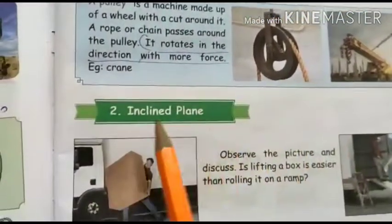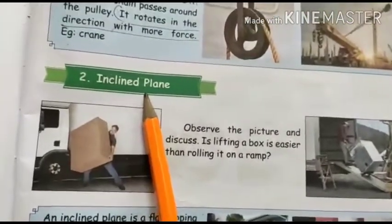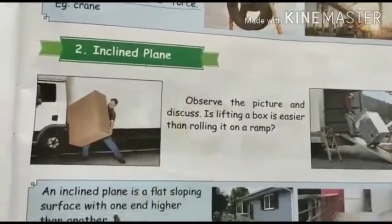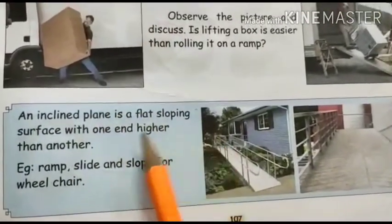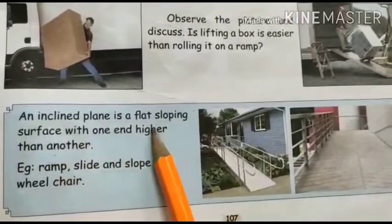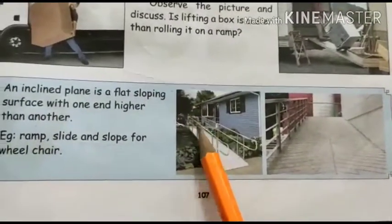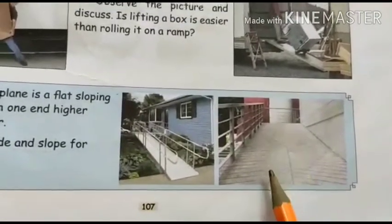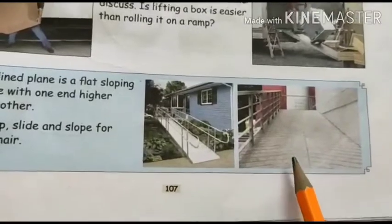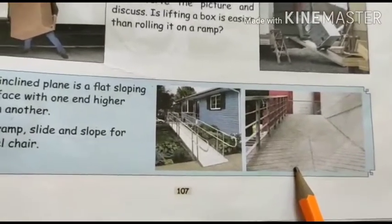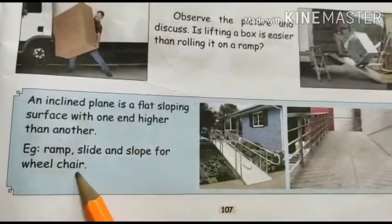Next: inclined plane. An inclined plane is a flat sloping surface with one end higher than another. Examples include a ramp, slide, and slope for wheelchair access.